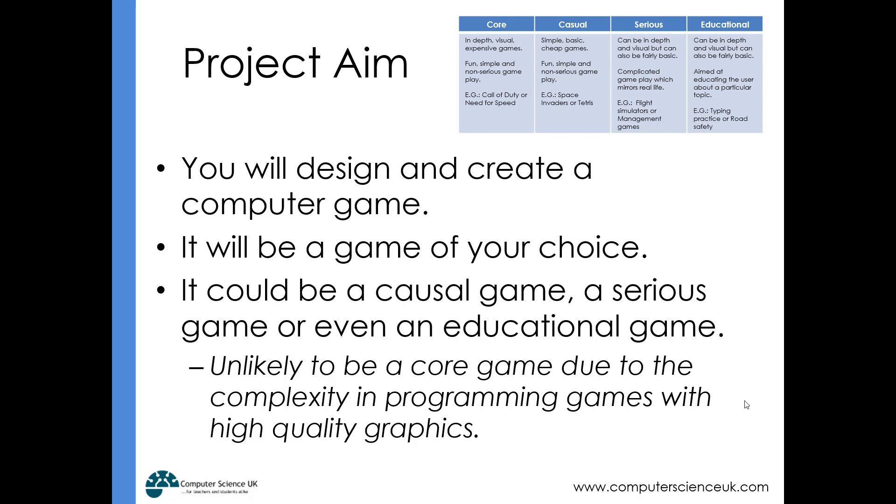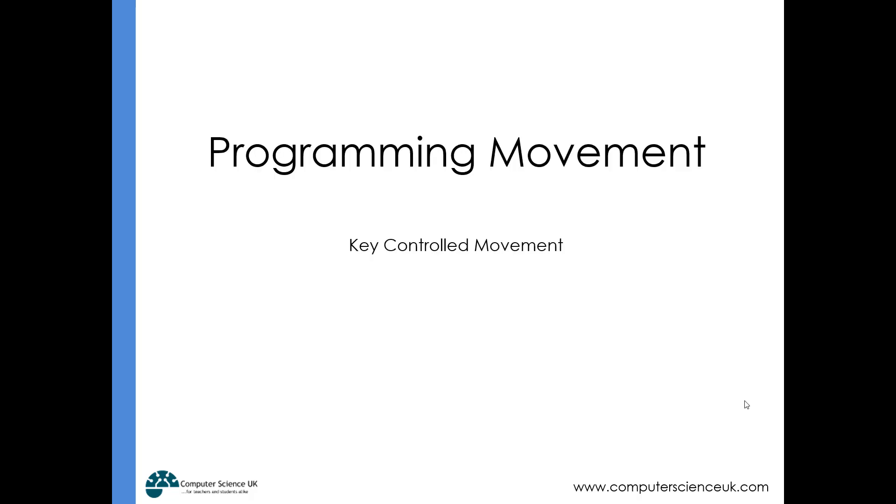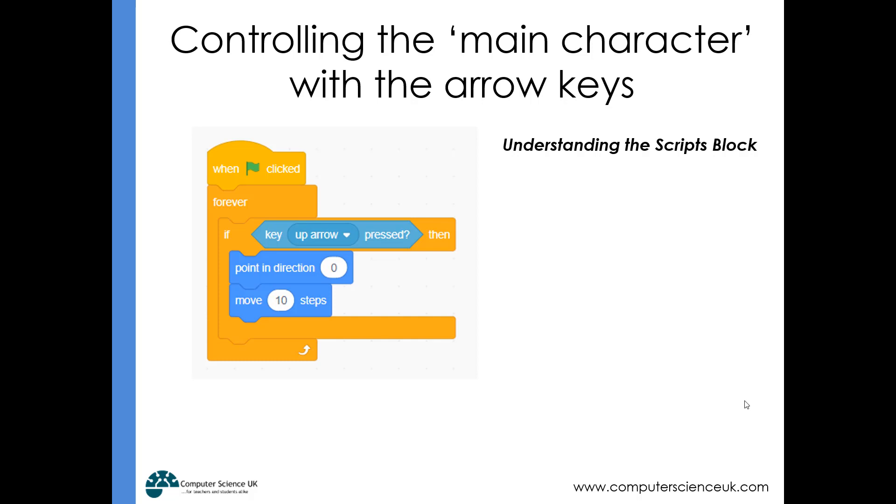Programming movement: First, we need to look at how we can program movement in Scratch. Here's an example block of code that will allow a sprite to move upwards when the arrow key is pressed, doing so in a smooth, controlled way. There are other ways to program movement, but sometimes they're quite jumpy—this is probably the smoothest way.